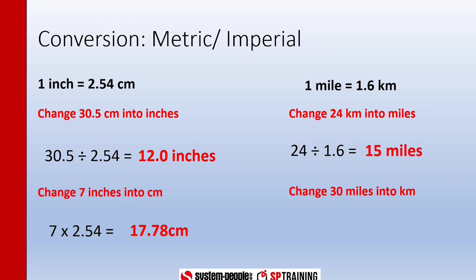And also we want to change 30 miles into kilometers. What we do is we multiply the 30 by 1.6, and we get 48 kilometers. So that's using a conversion factor.